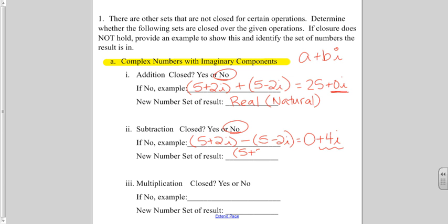What if I started with 5 plus 2i and I subtracted 5 plus 2i? Well, 5 plus 2i minus 5 plus 2i is zero, just straight up zero. So, this is no longer an imaginary component. We are now real. More specifically, this is a whole number, zero. So, that is an example of why the complex numbers with imaginary components are not closed for subtraction.